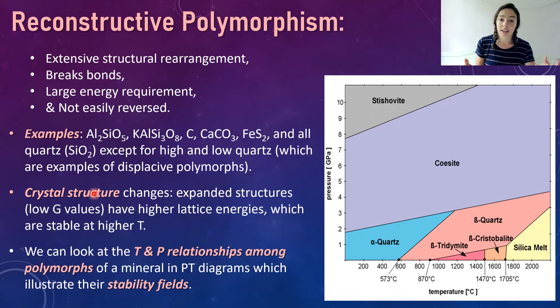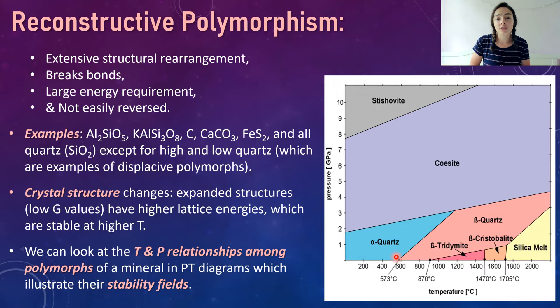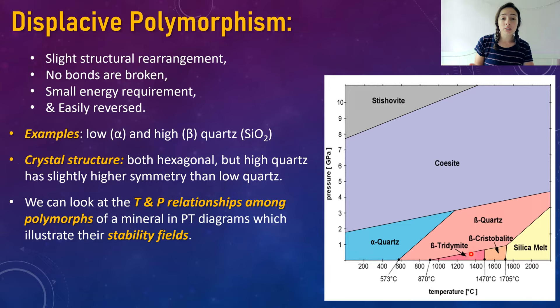More expanded structures with lower density are stable at higher temperatures. Looking at the diagram to the right, coesite, beta quartz, and cristobalite are stable at relatively high temperatures, meaning they probably have a relatively low G value and a more expanded structure. Whereas something like alpha quartz probably has a relatively compact structure and a higher G value. We'll show all the specific gravity values of all these polymorphs later in the examples section.